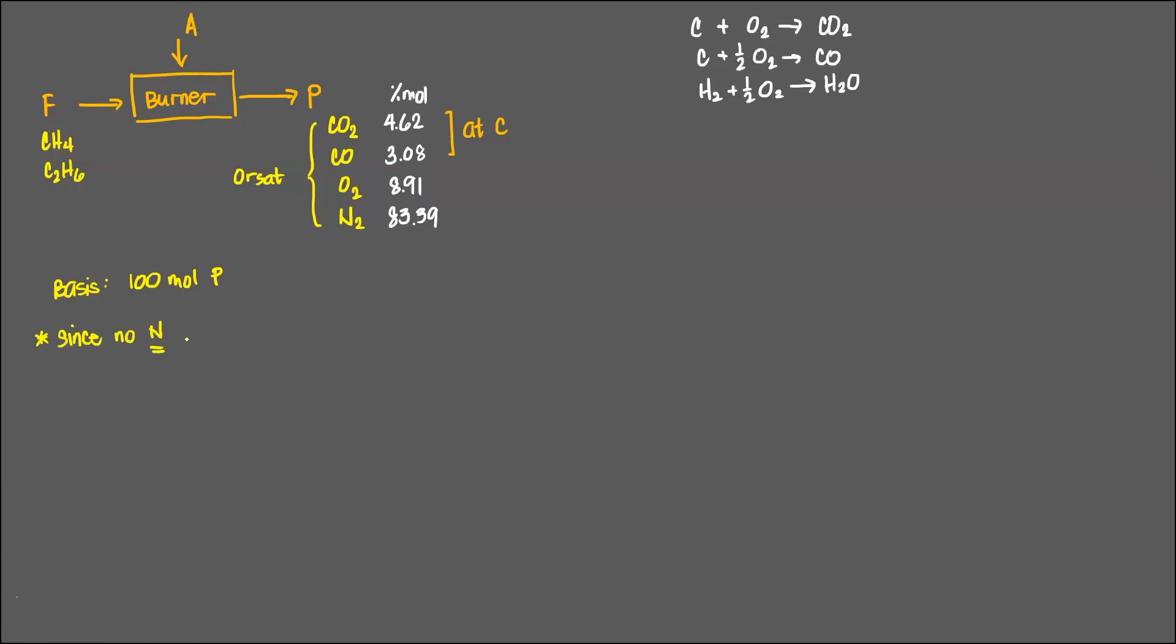The problem is, there are H here, but there's no H reported. Because it's an Orsat analysis. Since no N in fuel, N2 all from the air supplied. So we know now that the O2 supplied will be N2 supplied times 21 over 79. This one is 83.39 moles of N2 multiplied by 21 divided by 79. Can you please solve this for me? What's this one? 22.17 moles O2. That's the supplied.